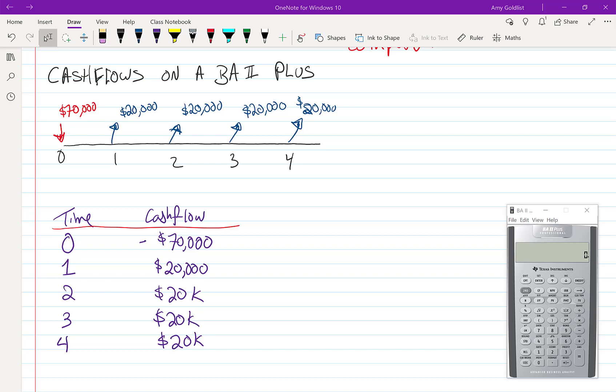Cash flows on a BA2 plus. We're still on question one from lesson 18. We're going to go over the same business that we've been looking at. This time we're going to use a BA2 plus.